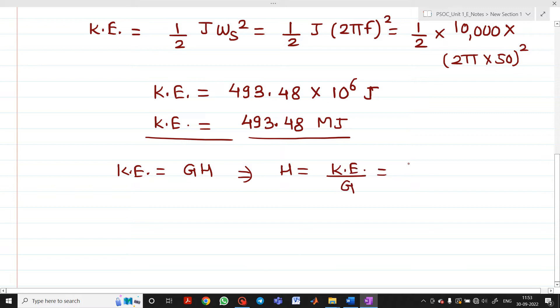The kinetic energy is 493.48 and G is the rating we calculated, 117.65. So the inertia constant H equals 4.194.